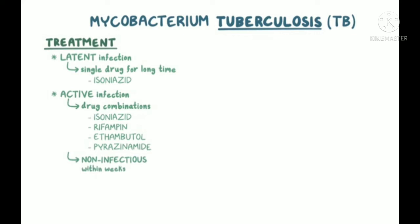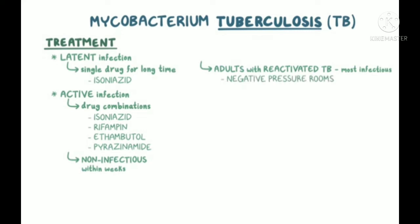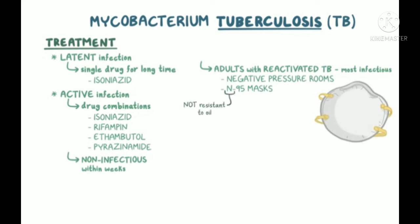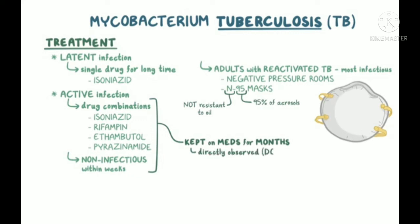Until that point, patients can spread TB to others, and it's typically adults with reactivated TB that are the most infectious. As a result, patients are typically kept in negative pressure rooms, and visitors are asked to wear protective N95 masks that can filter out at least 95% of aerosols — in this case, TB. Even after patients are no longer contagious, they're typically kept on multiple medications for many months to be sure the bacteria are destroyed, usually with directly observed therapy, or DOT, where somebody watches and confirms that you're taking the medication.